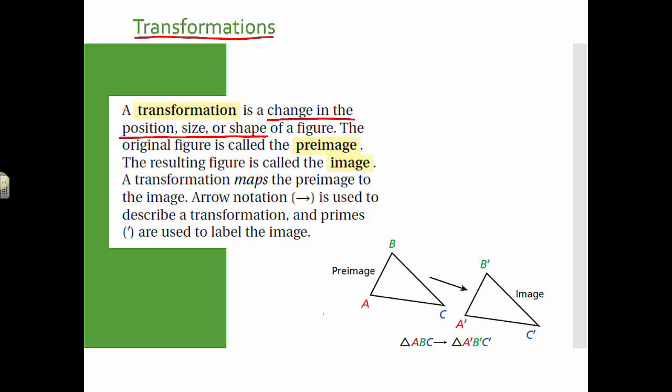We call the first image that we start with, the first picture of the shape, the pre-image, before anything happens. And then after you change the position, the size, or the shape, you have created an image. So pre-image is where you start, and an image is where you finish.